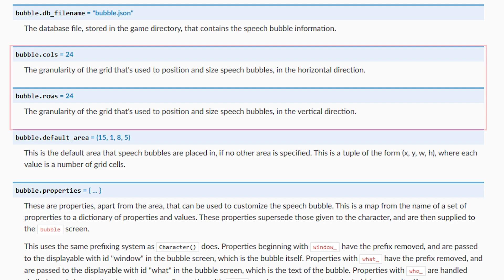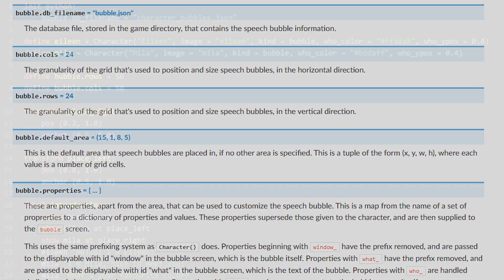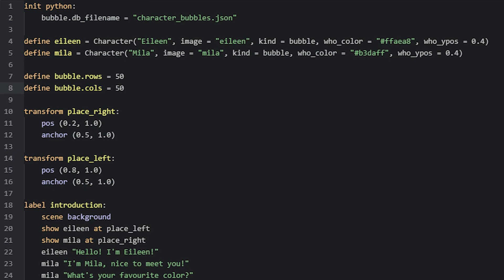This can be done with the bubble.rows and bubble.cols variables. As the name suggests, these two change the number of rows and columns in the grid. These variables you can set with the define statement, or inside of the init python block.